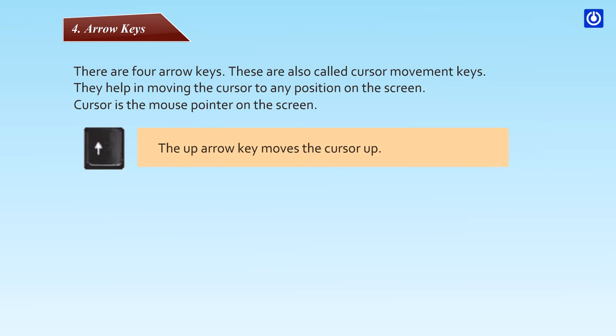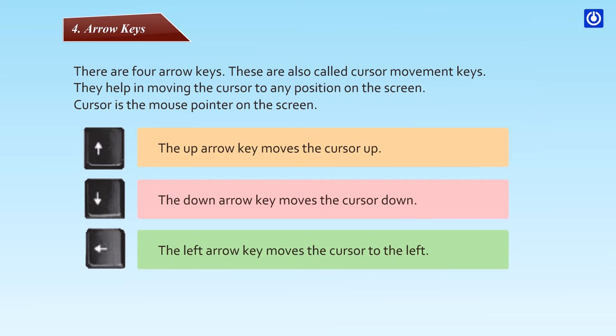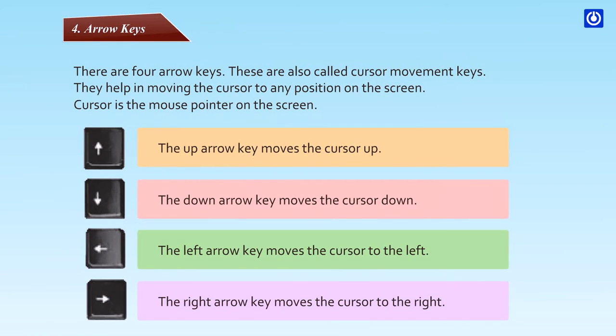The upper arrow key moves the cursor up. The down arrow key moves the cursor down. The left arrow key moves the cursor to the left. The right arrow key moves the cursor to the right.